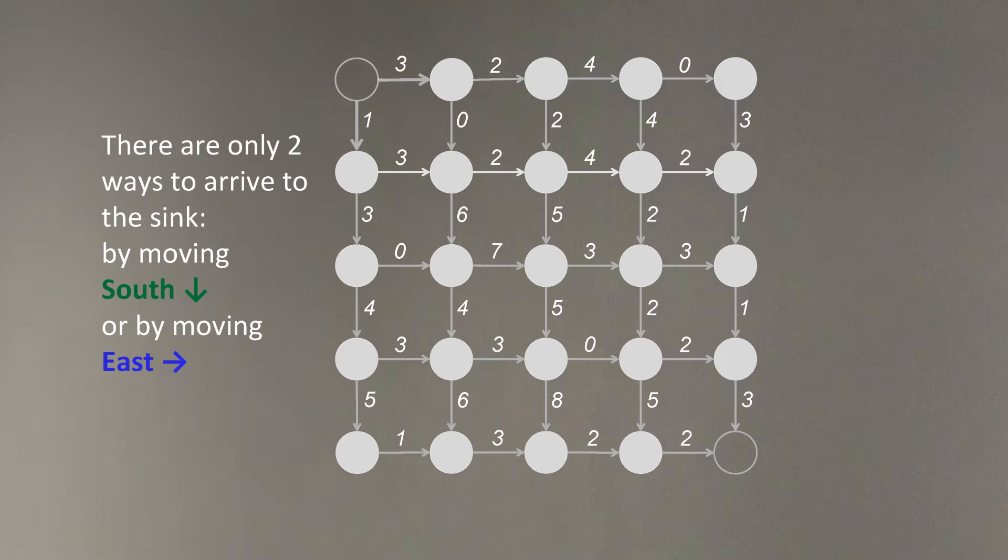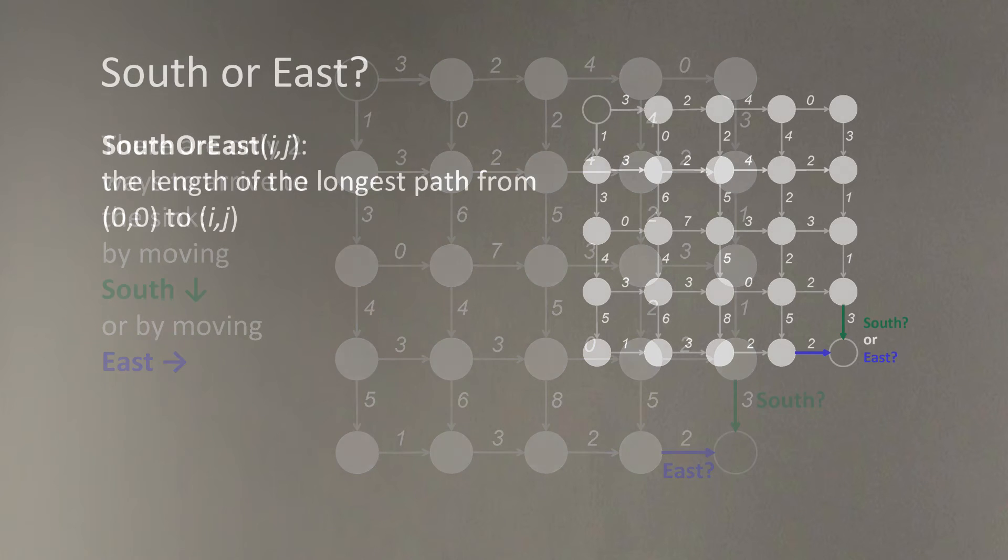At every step, there are only two decisions to make: either to move vertically or move horizontally, south or east. So to arrive to the final destination, we can either arrive by moving south or moving east.